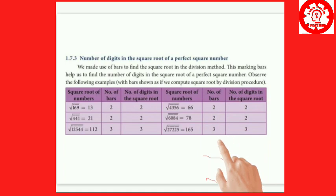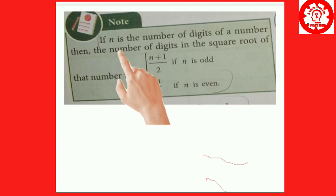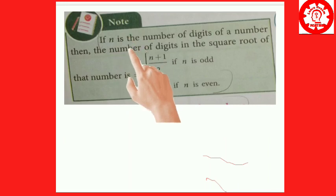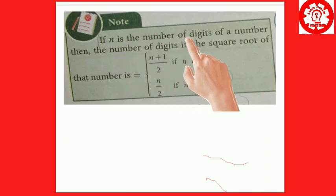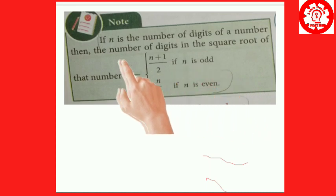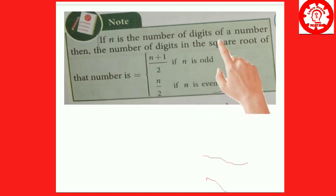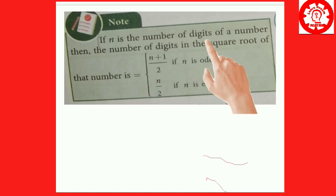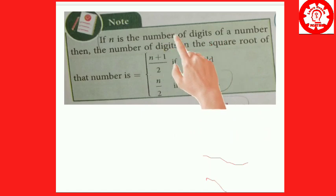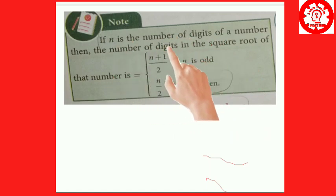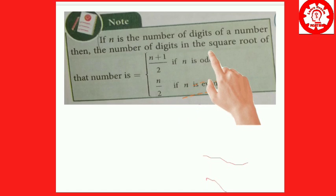This formula will be very easy and helpful. If n is the number of digits of a number, then the number of digits in its square root is n divided by 2, if n is even.